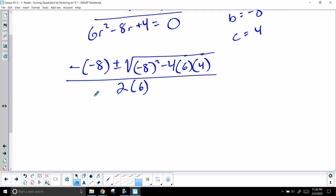So negative negative is positive eight plus minus, that's 64, minus 24 times 4 which is 96, 2 times 6 is 12. So we whittle this out some more, 8 plus minus 64 minus 96 is negative 32. And this is where we have our red flag.